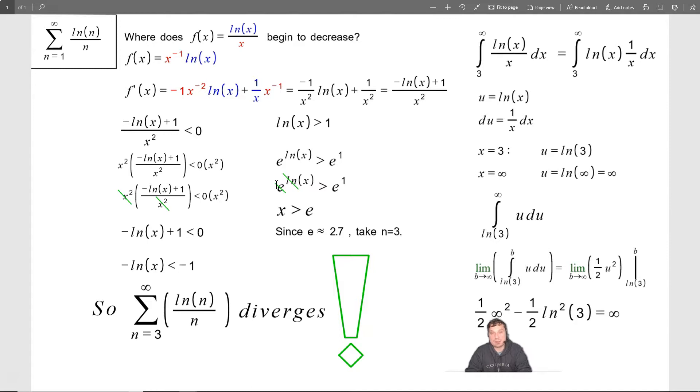This is not mathematically rigorous at this point, just because the idea crossed. So 1 half infinity squared minus 1 half ln squared of 3. Well, this value right here is just a constant. This, on the other hand, 1 half of infinity squared is still infinity.